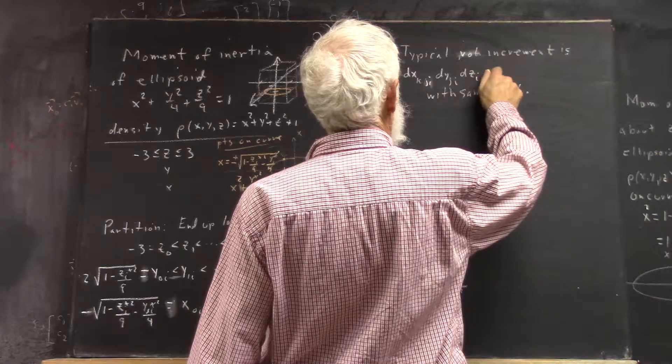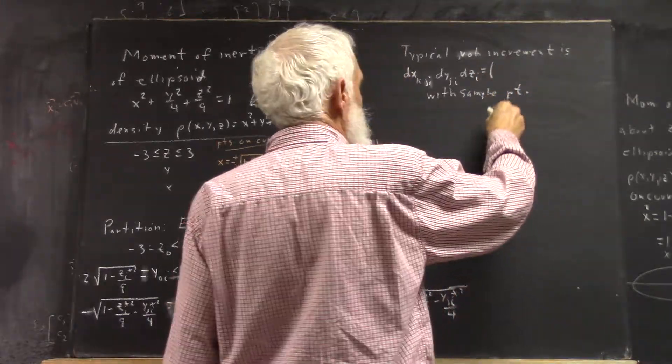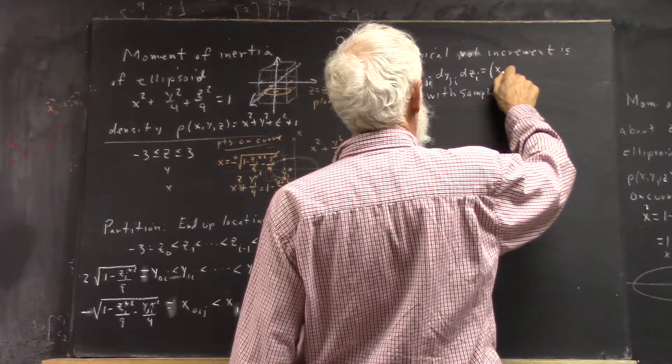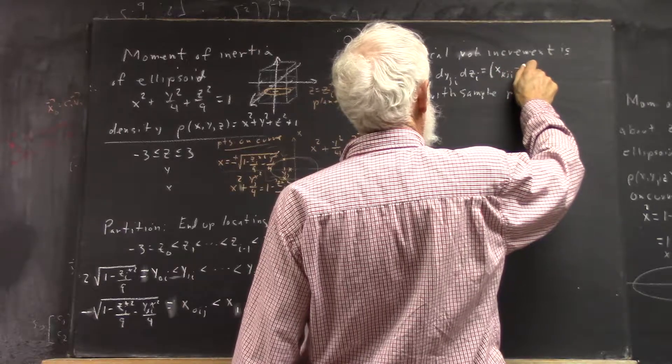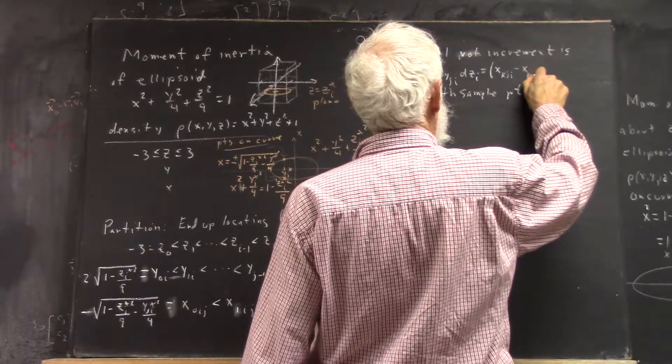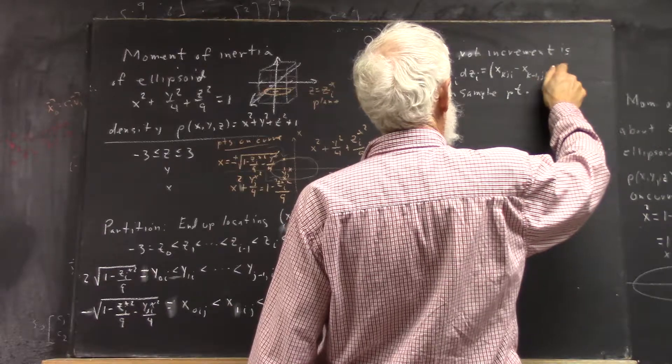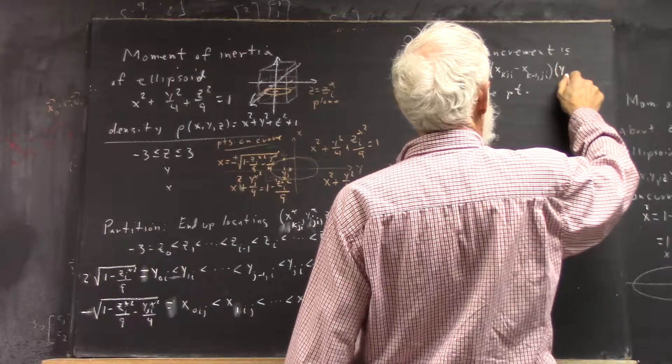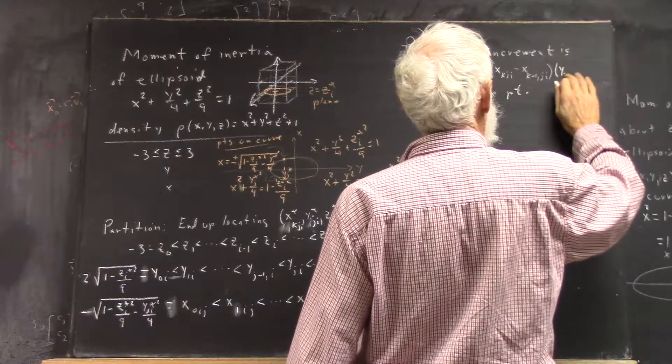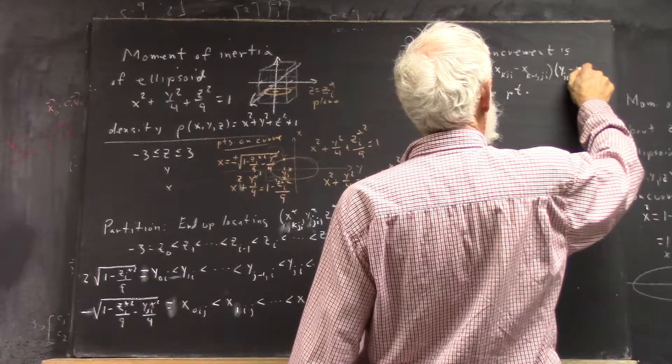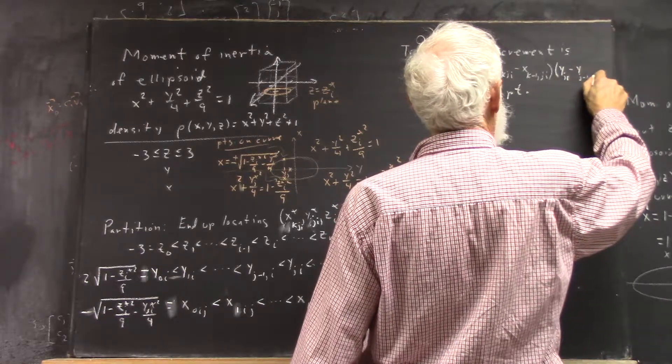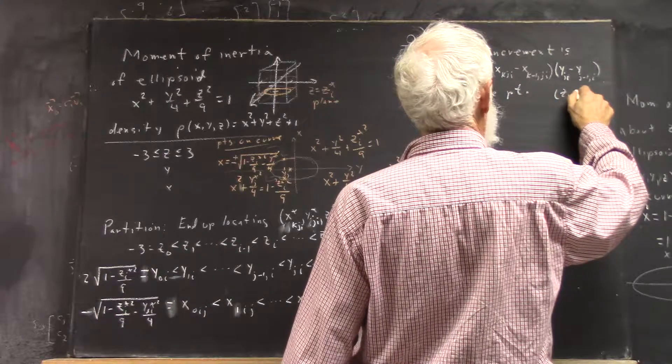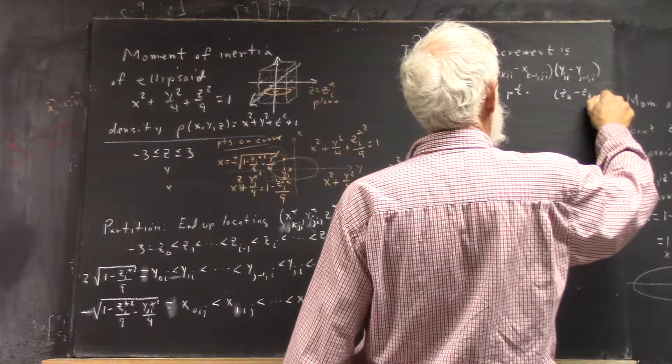Z-I, which equals what? X K J-I minus X K minus 1 J-I times Y J-I minus Y J minus 1 I. And then it's times Z K minus Z K minus 1.